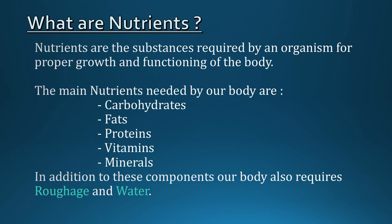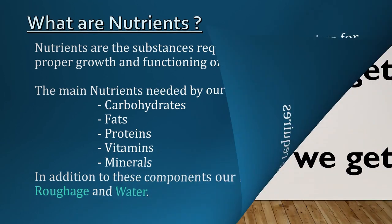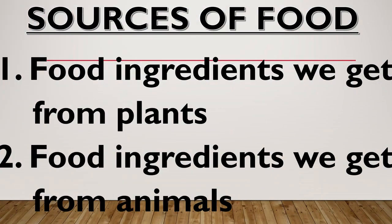In addition to these components, our body also requires roughage and water. After knowing the introductory part about food, we are curious to know where do we get food from. So in topic number 2, we will be looking at some sources of food, namely the food ingredients we get from plants and the food ingredients we get from animals.